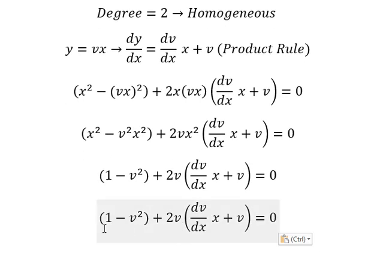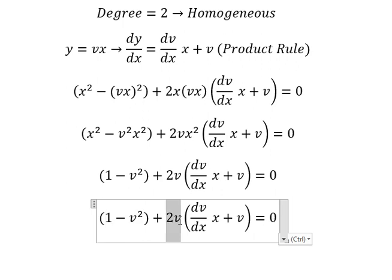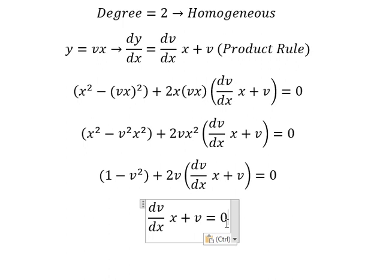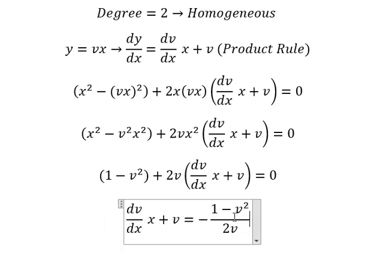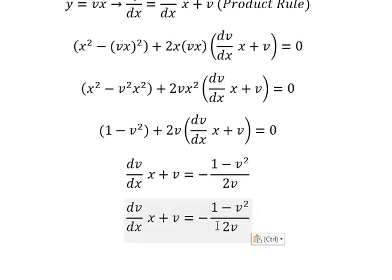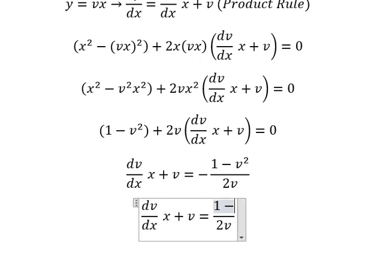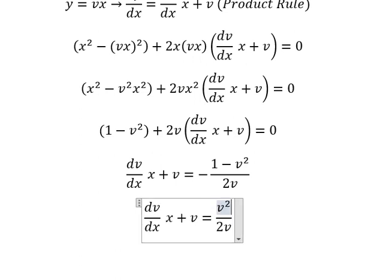Now I will move this term to the right and divide both sides by 2v, and now we have the result like this. We change the sign of this term — negative — and we have v squared minus one.